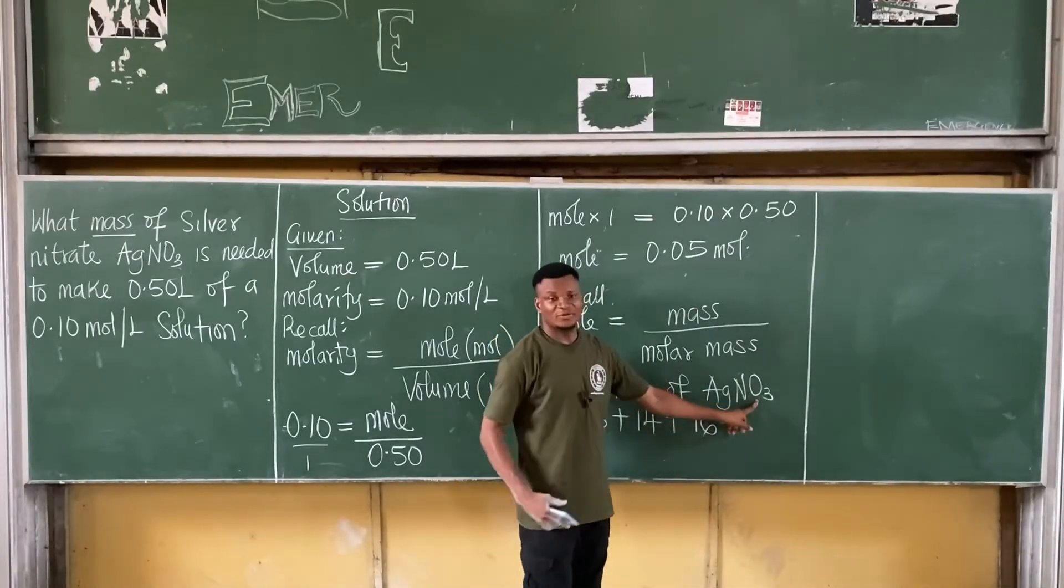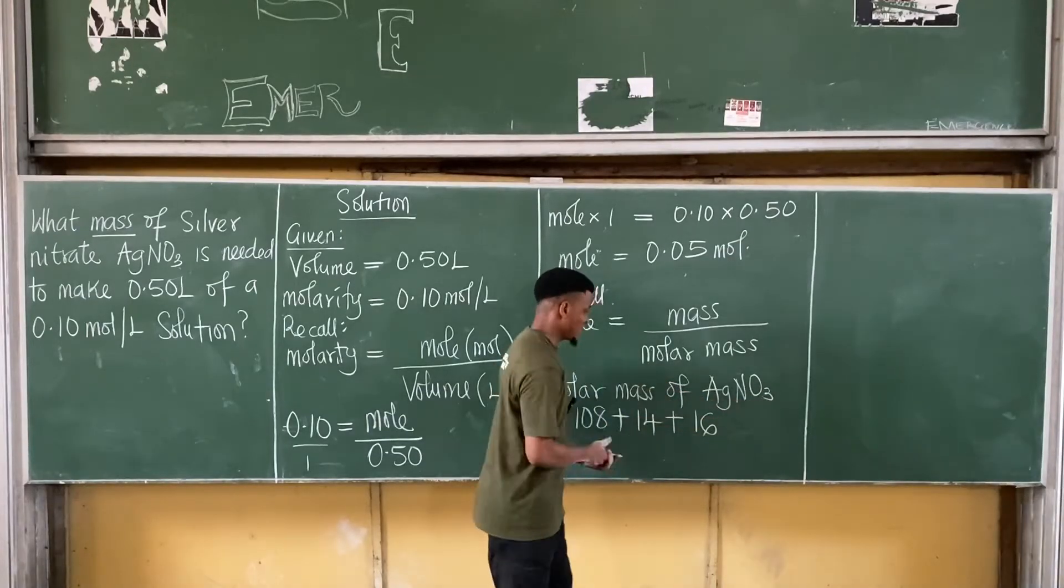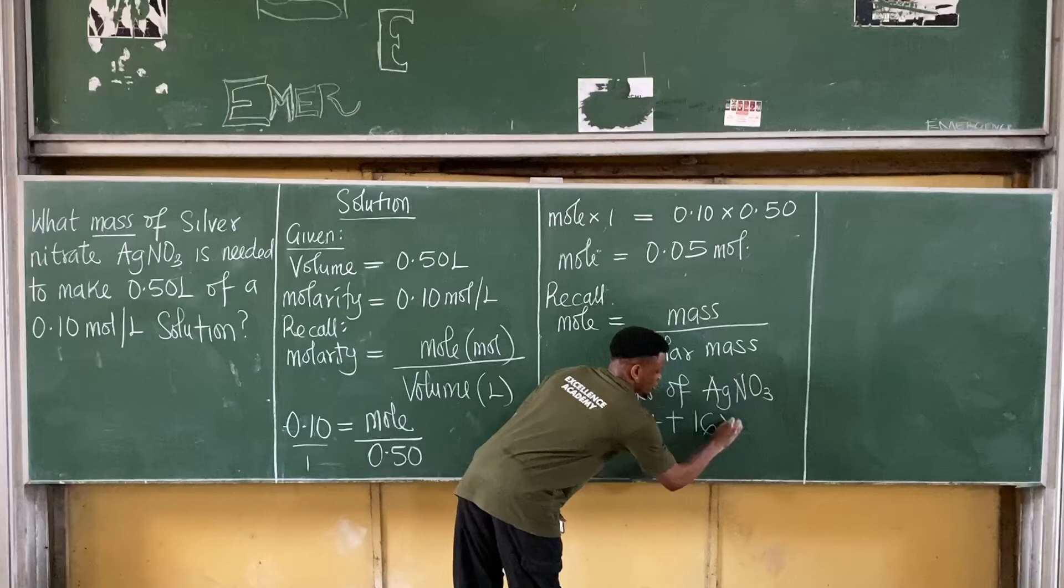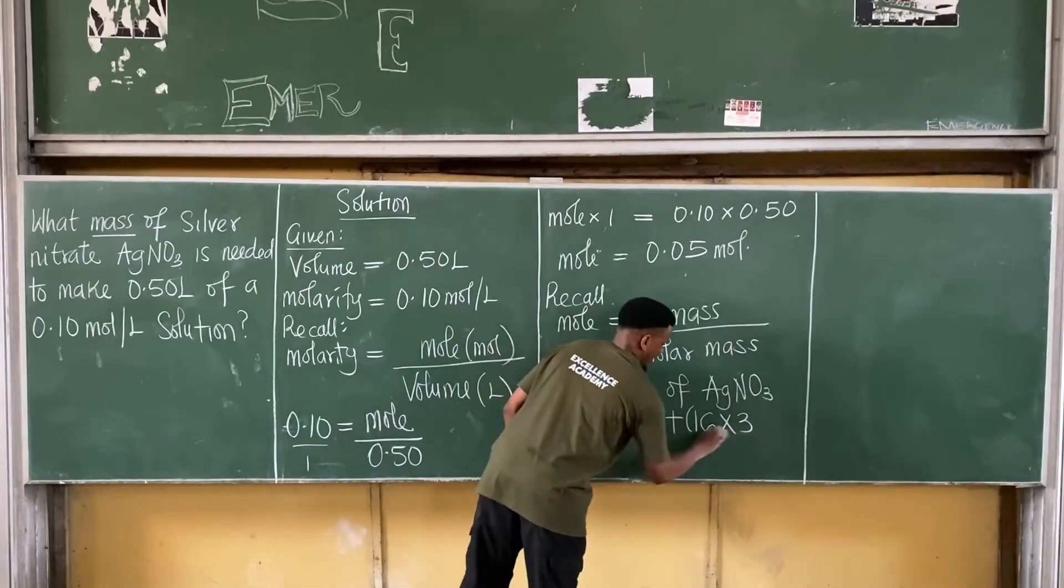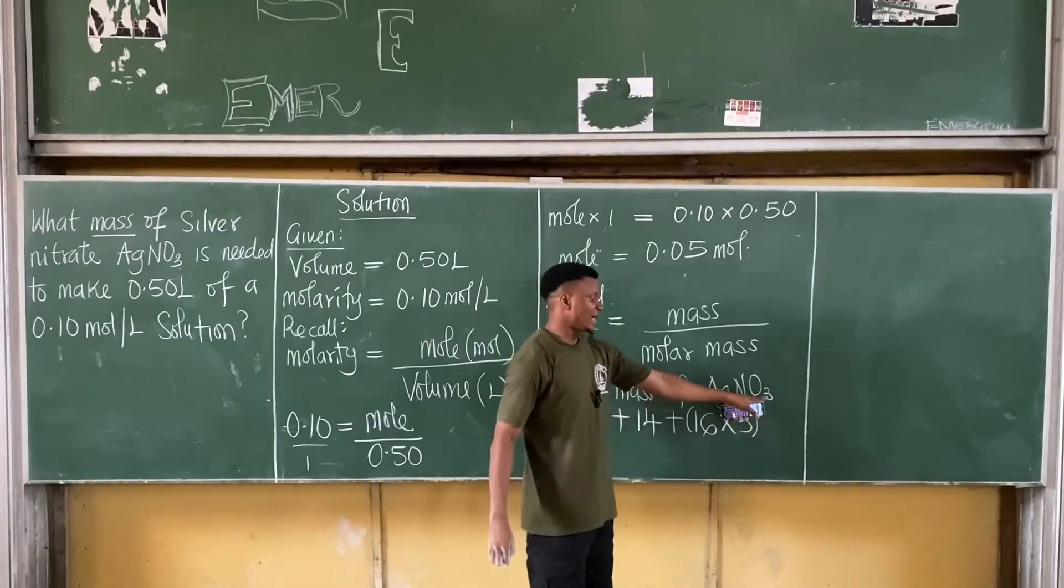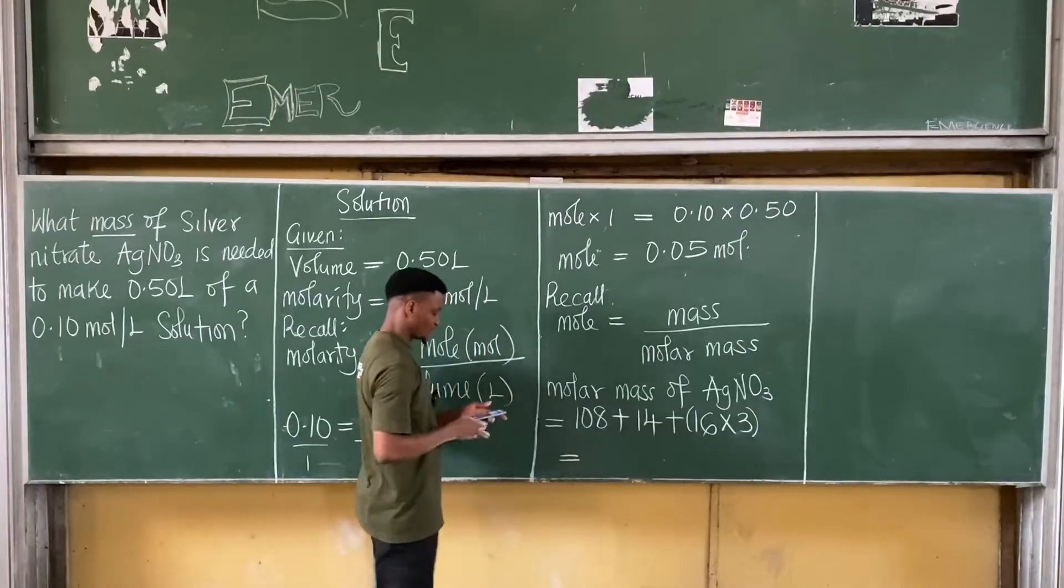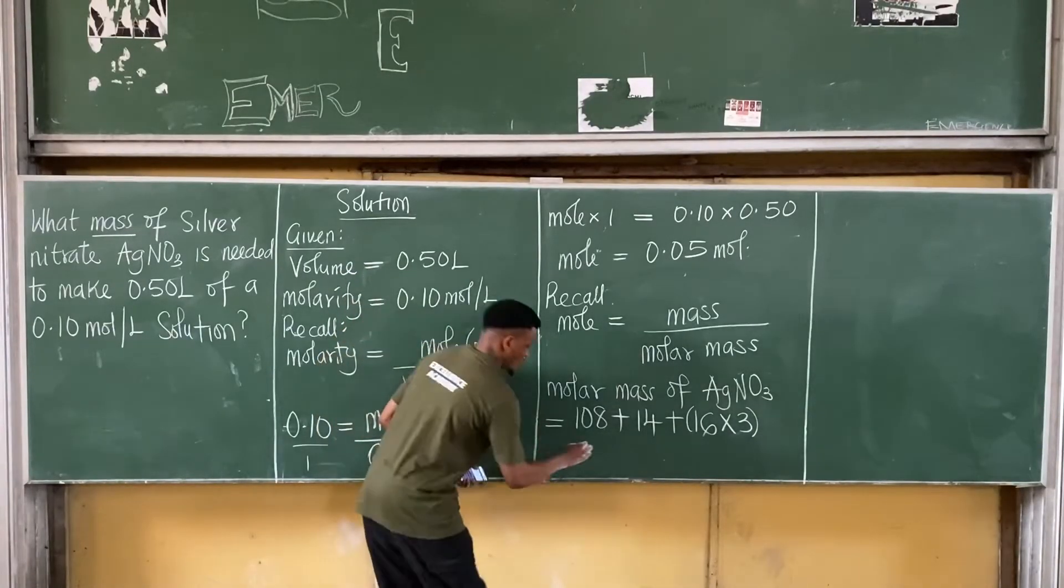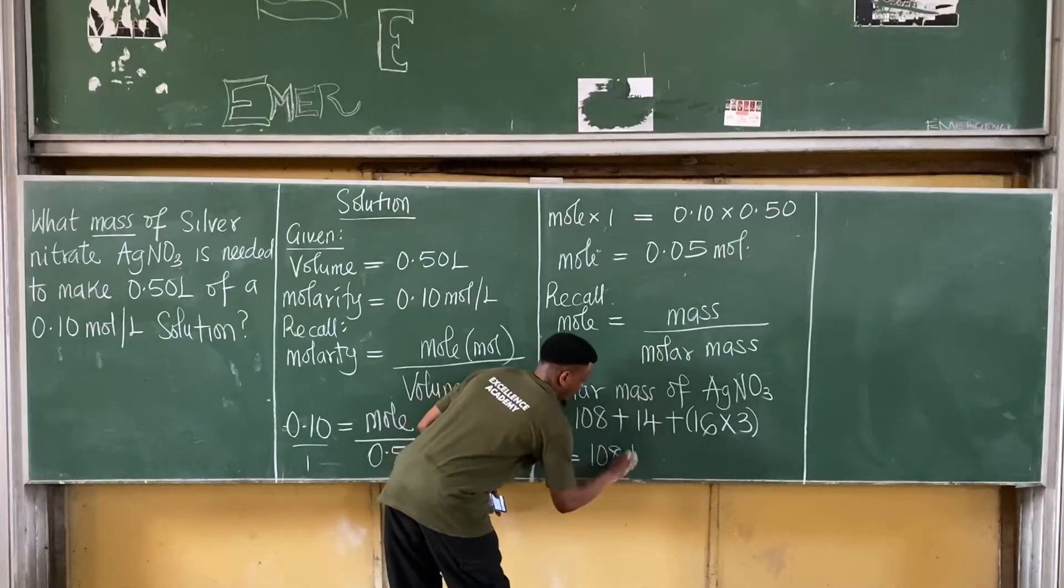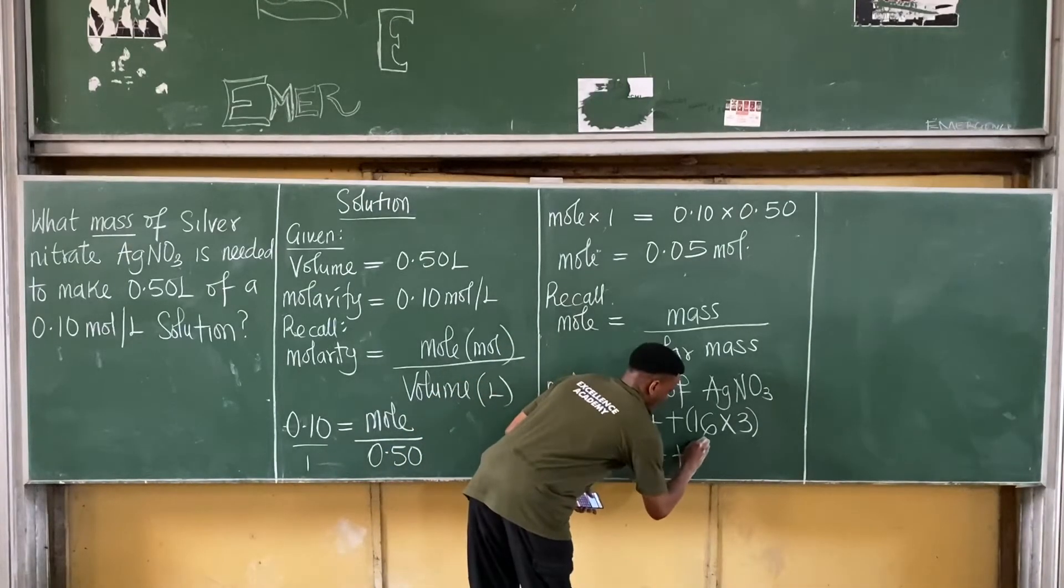So it becomes 16. But if you observe, I have a subscript of 3. That means I have 3 atoms of oxygen. This means I'll multiply the oxygen value by 3. So I have this. Alright, I multiply this one here by 3 because I have 3 atoms of oxygen. If I work on this, this is equal to, I'm having 108, so this gives me 108, 108 plus 14 plus